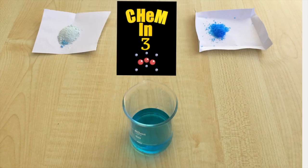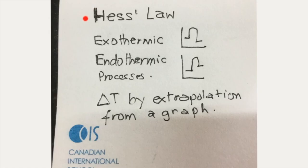Welcome again. Today on Chem in 3, we consider another application of Hess's law. We reinforce the terms exothermic and endothermic processes. We consider how to determine delta T by extrapolation from a graph, so that we can use it in calculating enthalpy changes.